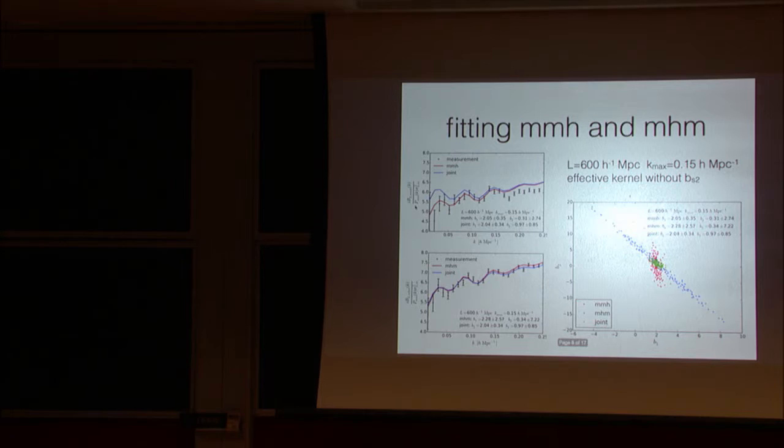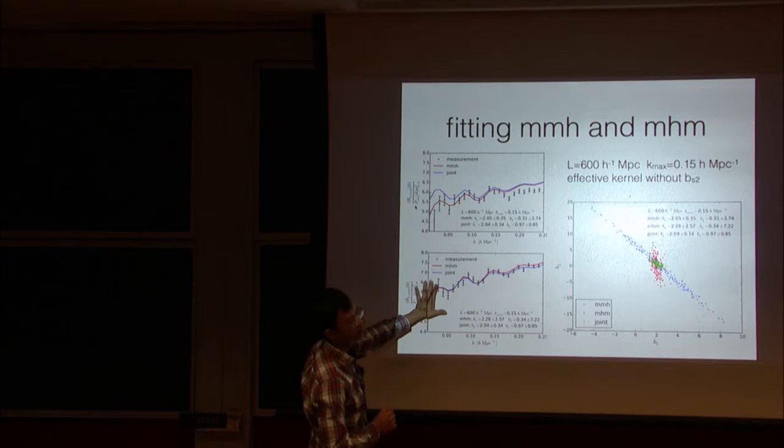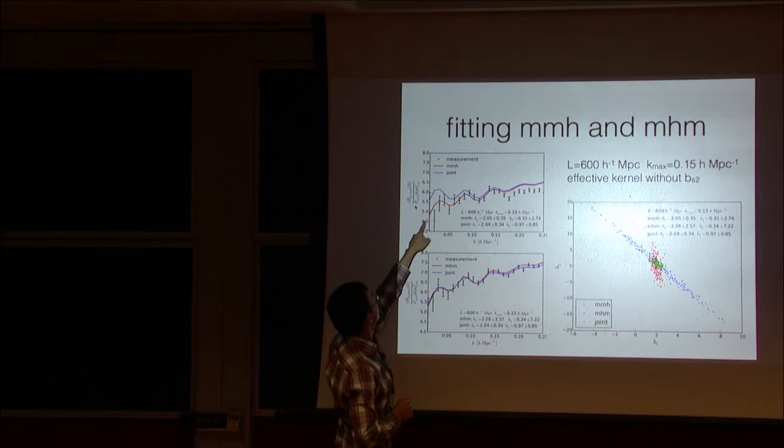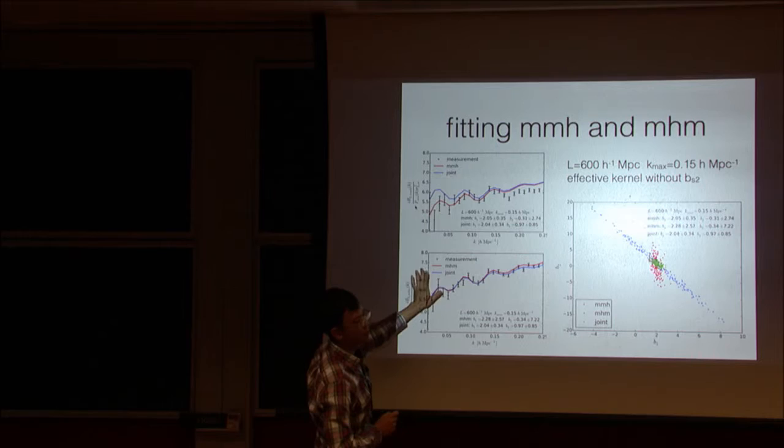So we just take those models and fit to the measurement from simulation. So this is the measurement for matter matter halo. So halo being the long wavelength mode. And matter halo matter. So halo being the short wavelength mode. The data points are measurement. And the red line is fitting MMH only. So the bias parameter is from MMH only. And the blue line is for joint fit MMH and MHM. And the bottom panel is the same. It's just for matter halo matter.